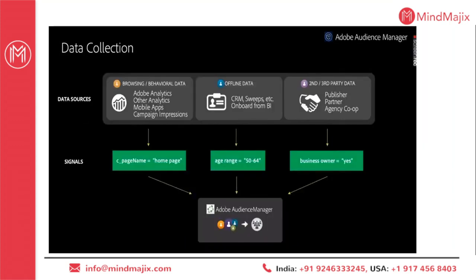Going further into data collection and how Audience Manager works with regard to data sources — any data can be uploaded: offline, online, third-party, or first-party, with no constraint. The first type of data is browsing or behavioral data — all the data that is collected from Adobe Analytics. On the website there is an Adobe tag, and when clients have Adobe Analytics as well as Audience Manager, all the data collected in Adobe Analytics will be available in Audience Manager as well through some settings within Audience Manager Analytics, after which data starts flowing in. Any other analytics data or campaign impressions from other systems can also be linked as an Audience Manager data source.